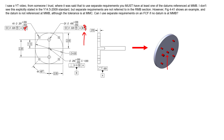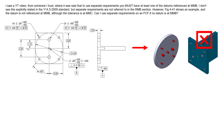We would have a single gauge where the datum simulator for B is a single pin — it doesn't have to expand because we use the MMB modifier. We could also leave this modifier off on both feature control frames and simultaneous requirements still applies to A and B modified at RMB. So whether or not we have MMB, the gauge has pattern one and pattern two clocked together due to simultaneous requirements. A part would have to be failed if these patterns aren't clocked together, even without a datum explicitly requiring it.